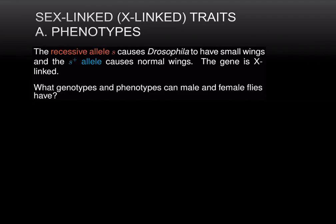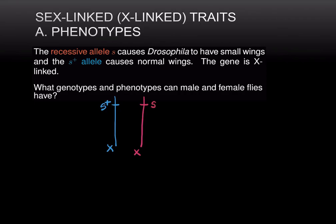What does it mean when we say a gene is X-linked or a trait is X-linked? A gene is said to be X-linked when it lies on the X chromosome. Females have two X chromosomes whereas males have one X and one Y chromosome, and the number of X chromosomes determines sex — hence these chromosomes are called sex chromosomes. In this case we have two different alleles of the gene and therefore two different versions of the X chromosome: the blue one that carries the normal S-plus allele, and the red one which carries the recessive allele S that causes Drosophila to have small wings.